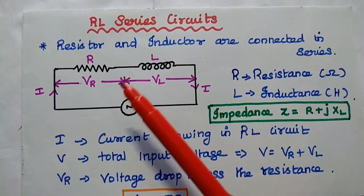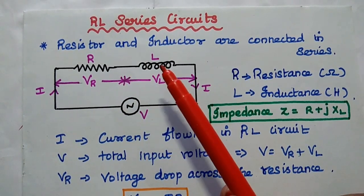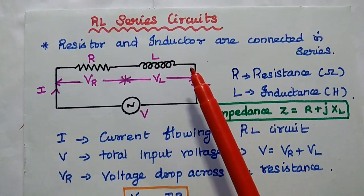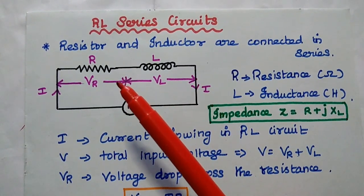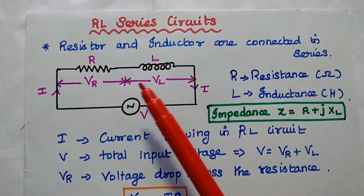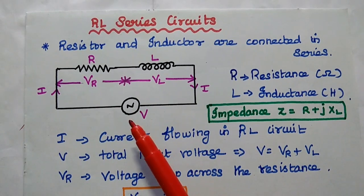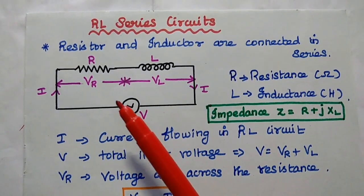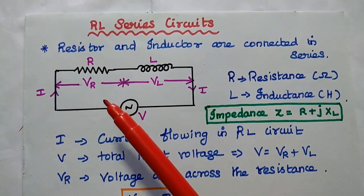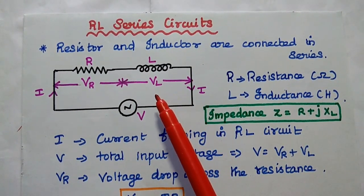Here R represents the resistance with the unit Ohm, and L represents the inductance value with unit Henry. The resistor and inductor both are connected in series. The current is the same but the voltage is divided. The voltage drop across the resistance is VR, and the voltage drop across the inductor is VL.